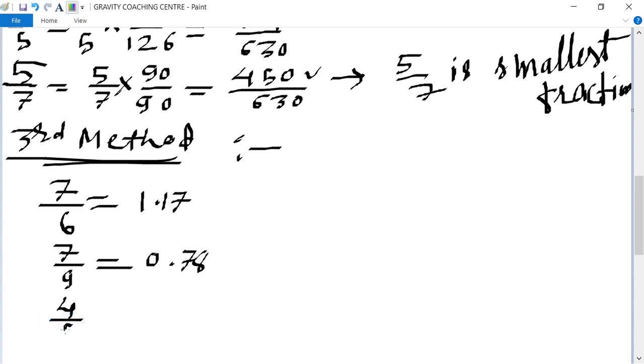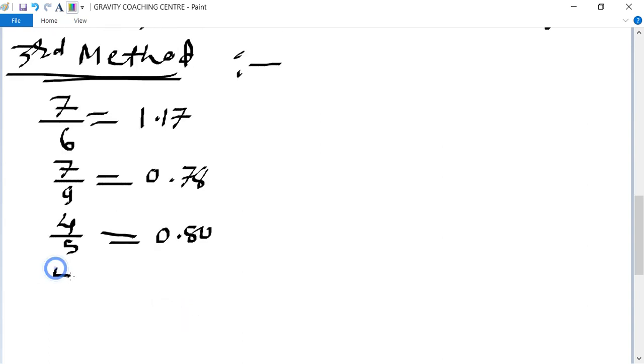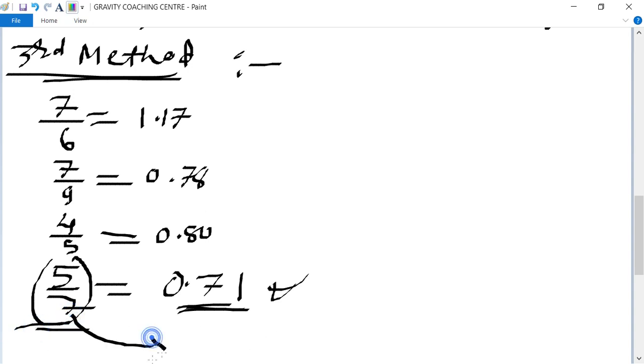And 4 by 5 equal to 0.80, and 5 upon 7 equal to 0.71. So in this decimal number, 0.71 is the smaller one, so 5 by 7 which is the smallest fraction.